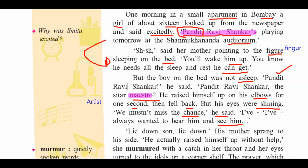Now we understand the situation: there is a family in an apartment in Bombay — girl, mother, and a boy. Three characters are introduced. The girl is Smita — sixteen years old. The boy is Anant — ill. His words: 'We must not miss the chance. I have always wanted to hear him and see him.' He wants to see Pandit Ravi Shankar, the sitar master.